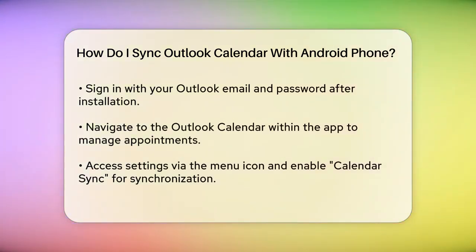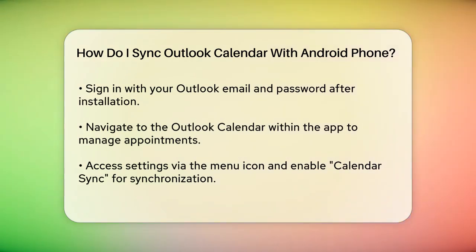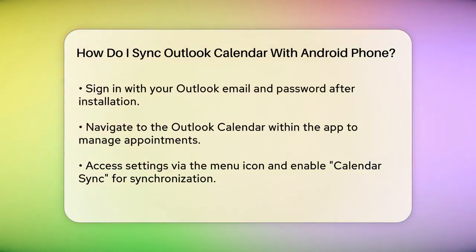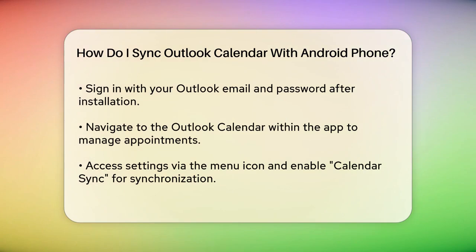After signing in, navigate to the Outlook calendar within the app. Here you can view, add, and manage your appointments just like you would on your computer. To ensure your Outlook calendar syncs with your Android device, go to the menu icon in the upper left corner of the Outlook app, select Settings, and then find the option to add your Android calendar. Make sure Calendar Sync is enabled to give the Outlook app permission to access your calendar data.